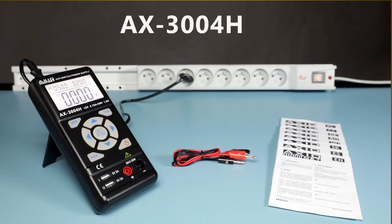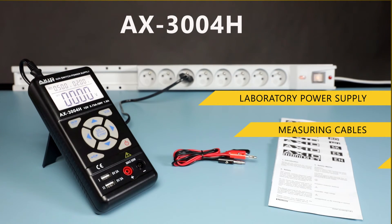You can calibrate voltage and current. The AX3004H kit is equipped with the laboratory power supply, measuring cables, power cable, and operating manual.